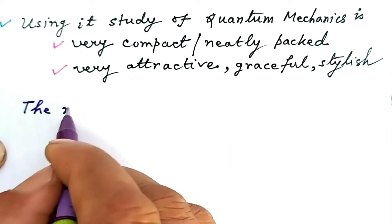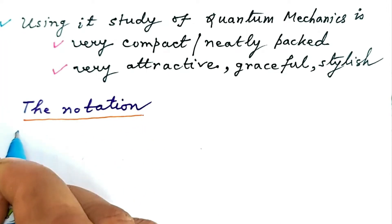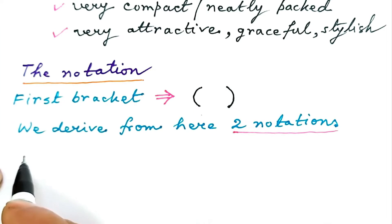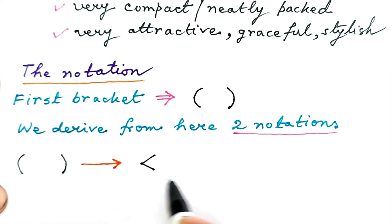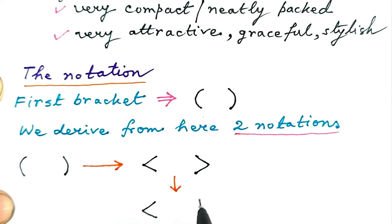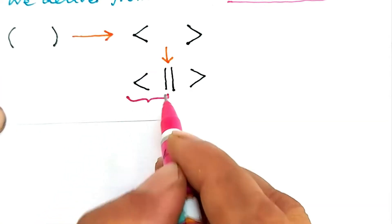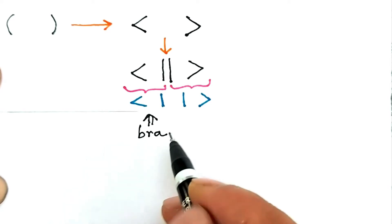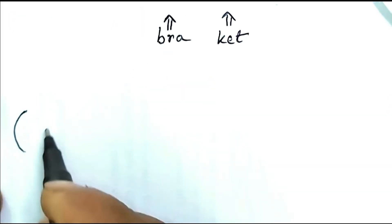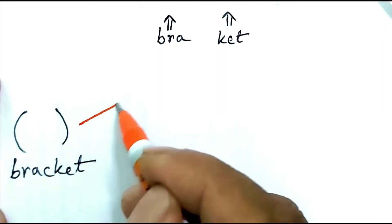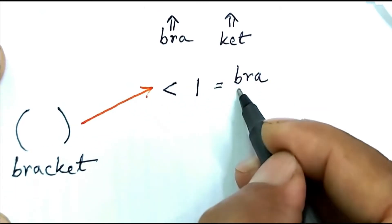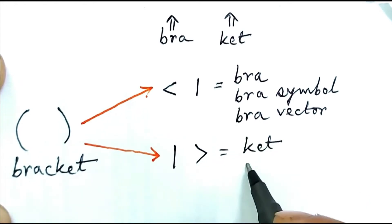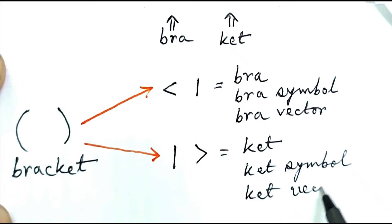Let us now come to Dirac's notation. Consider the first bracket symbol. From this symbol, we derive two notations. We rewrite the first bracket as angular brackets, then place two vertical lines within it and split it into two parts. The left part is referred to as Bra notation, while the right part is referred to as Ket notation. From the first bracket symbol, we are led to two notations: one is called Bra, or Bra notation, or Bra symbol, or Bra vector; the other is called Ket, or Ket notation, or Ket symbol, or Ket vector.